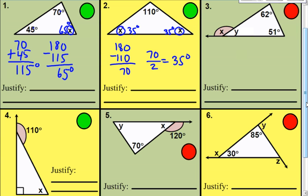Number three gets into tougher questions because of the exterior angle x. There are a couple of different ways to do this. You could use the theorem where the two non-adjacent angles added together equal the exterior angle. So 62 plus 51 equals 113 degrees — that must be the exterior angle.